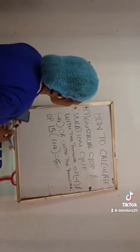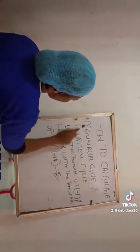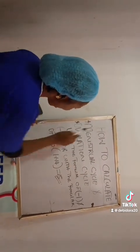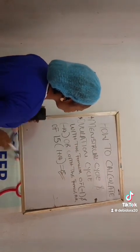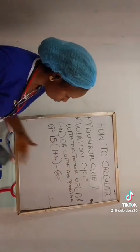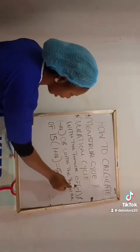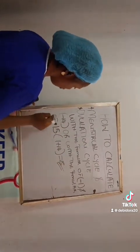Here is how to calculate your menstrual cycle and ovulation cycle. I'll show you with my practical calculation. These are practical ways of how to calculate menstrual cycle and ovulation cycle, using a formula of minus 1 and minus 14, or with a formula of 15.